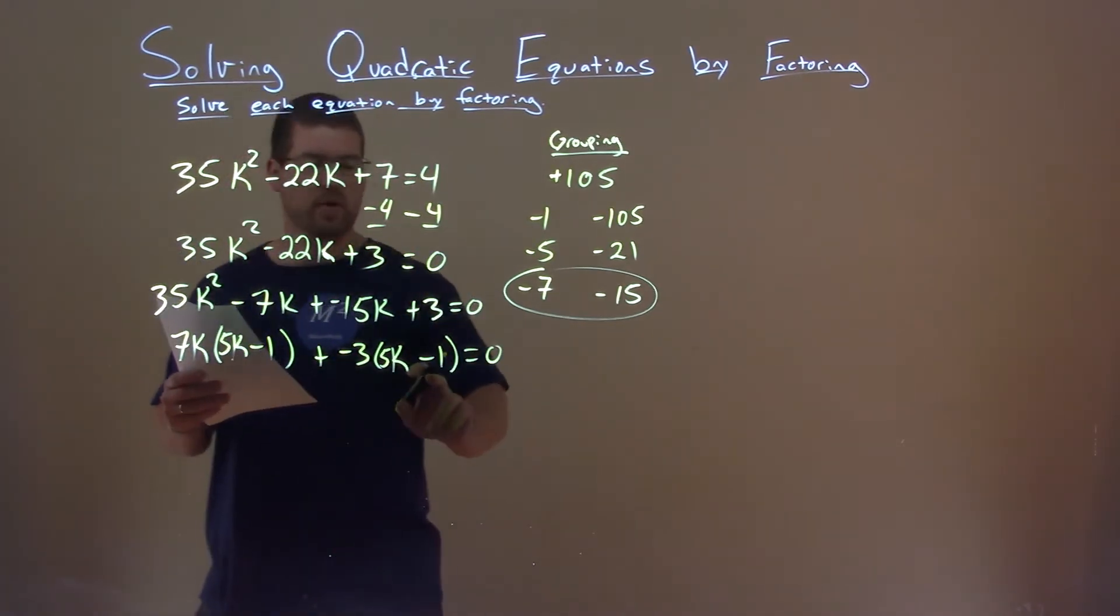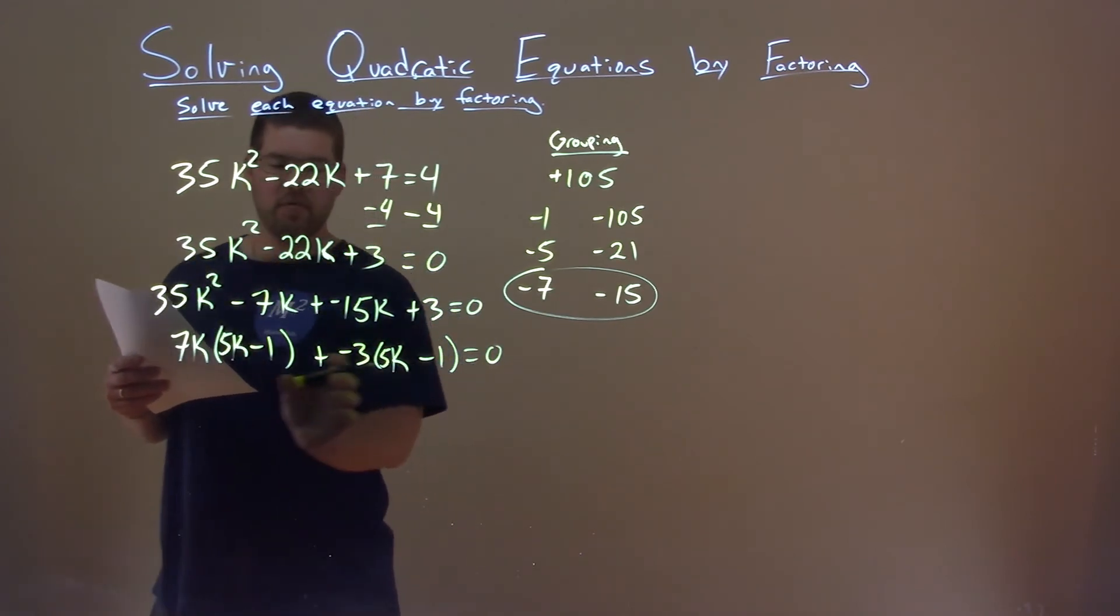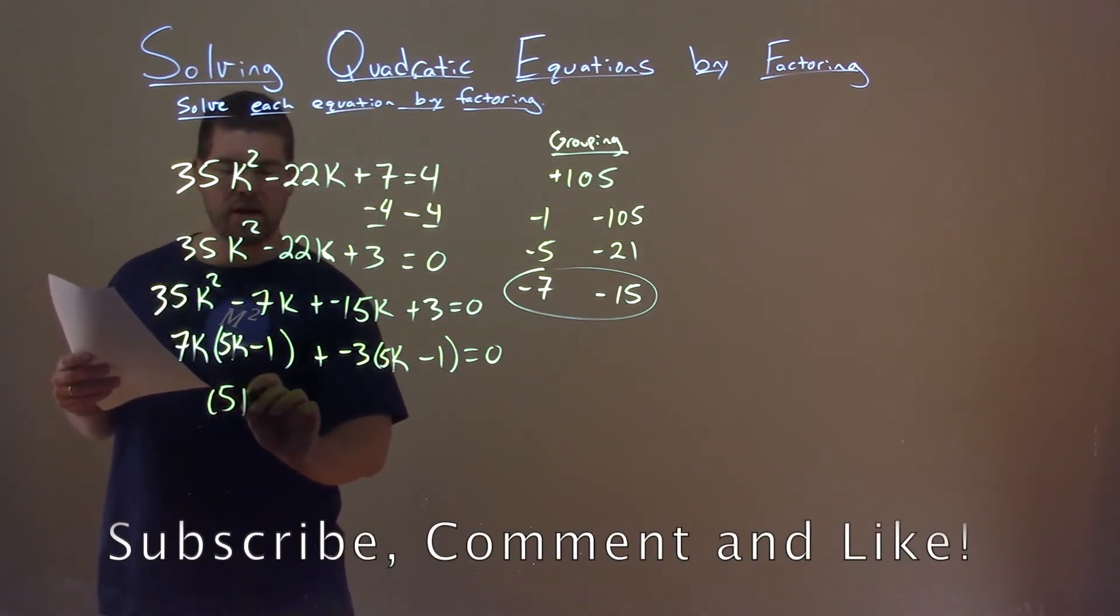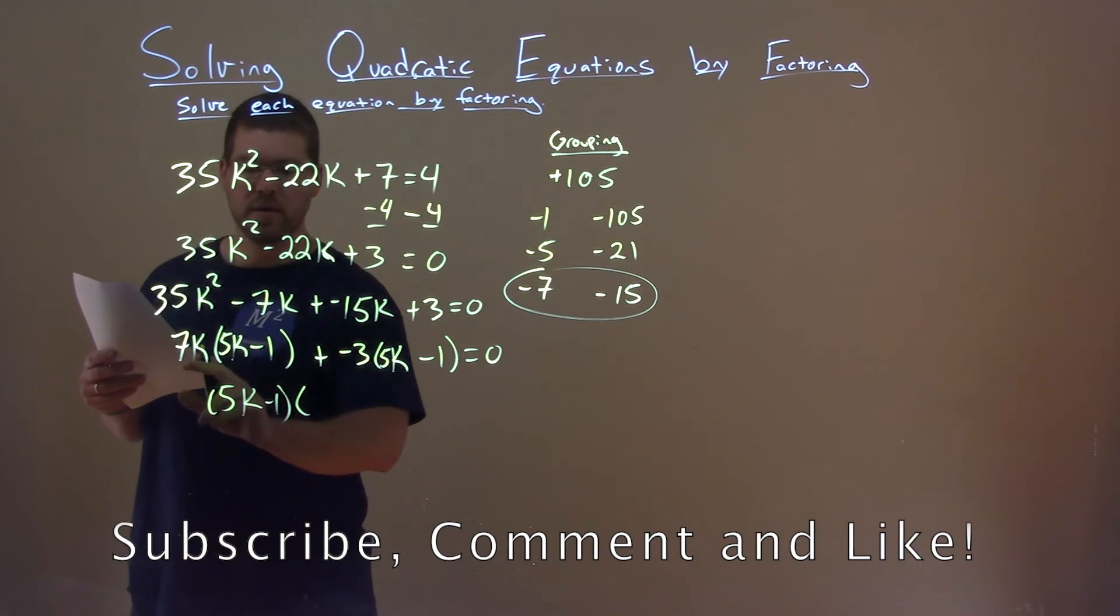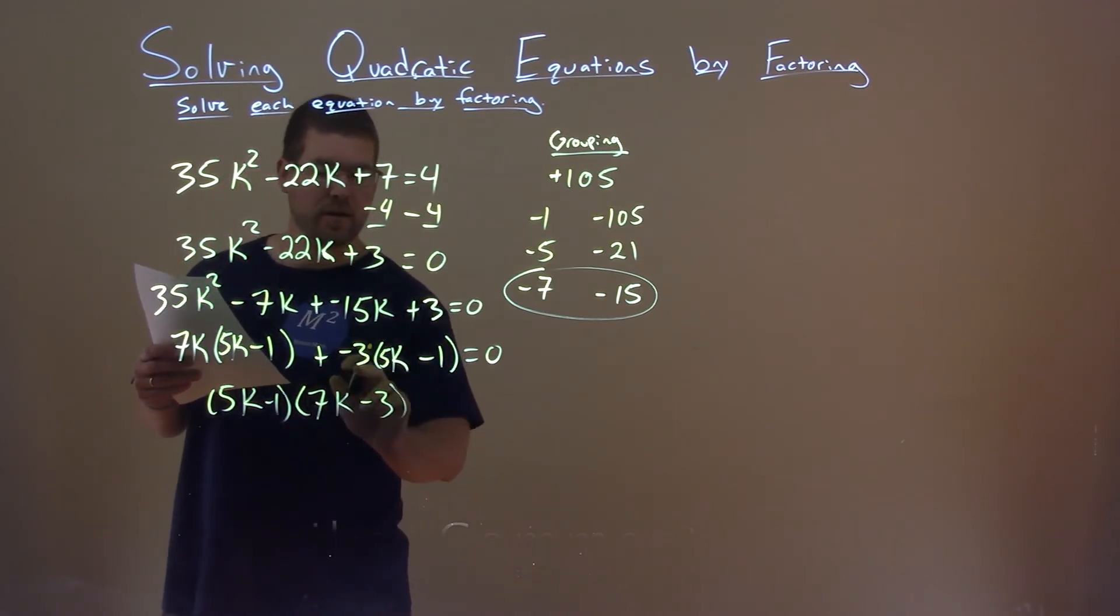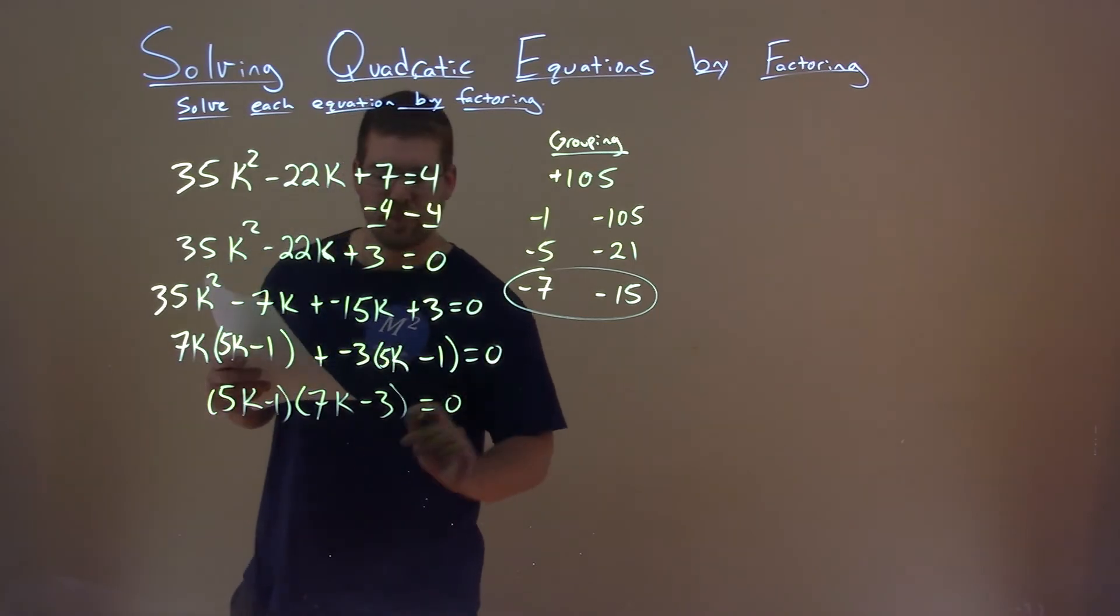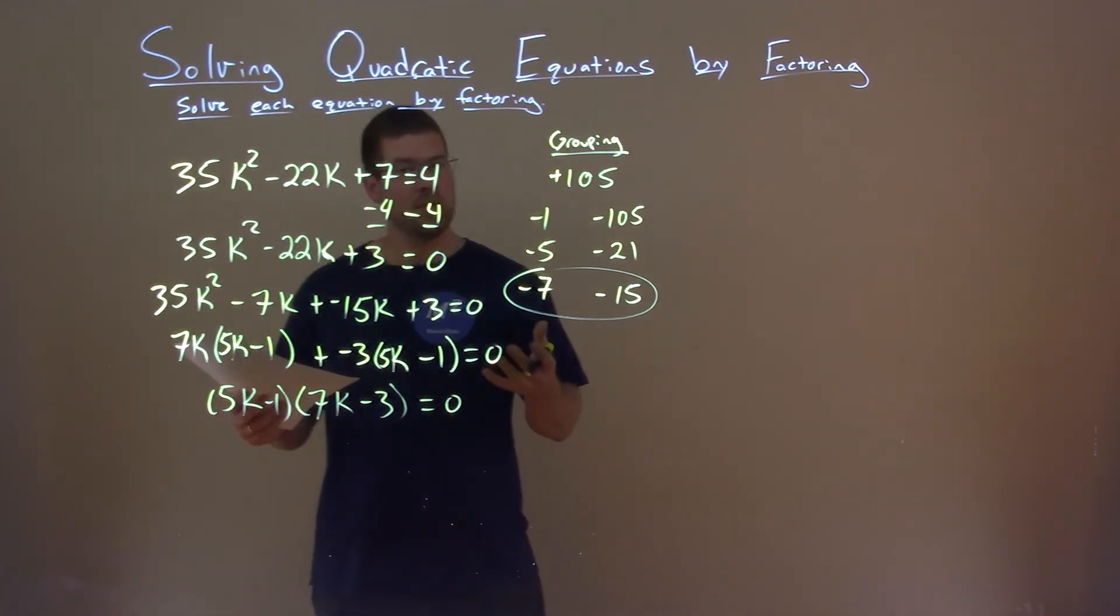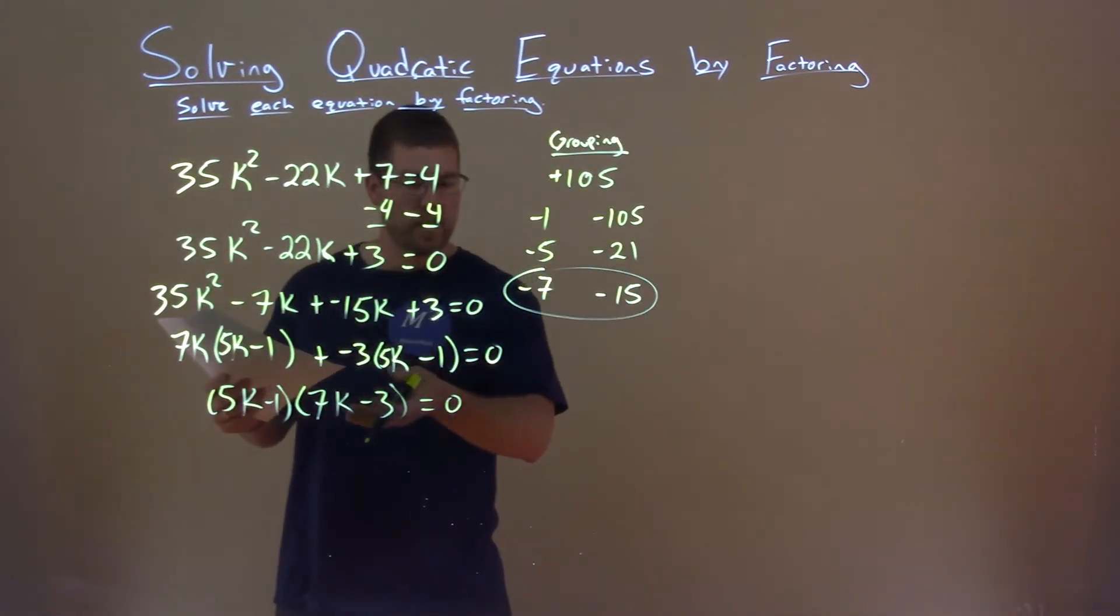Notice we have 5k minus 1 and 5k minus 1. If we pull that out, we have 5k minus 1 here from both parts. This being multiplied, the 7k comes down, and the minus 3 comes down as well. Now we have two parts being multiplied and factored, and then we're set equal to 0.